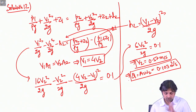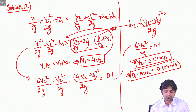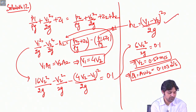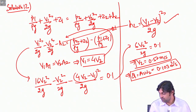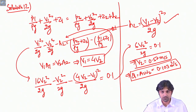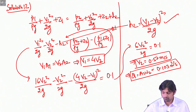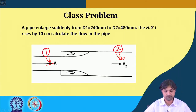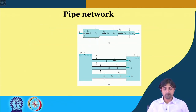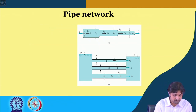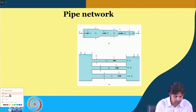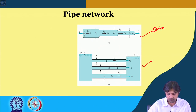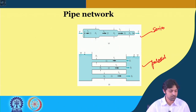This is a simple application of Bernoulli's equation, the equation of continuity, and the minor loss formula for sudden expansion: HL = (V1 − V2)²/2g, as covered in the topic on minor losses in pipes. We now proceed to the topic of pipe networks, where pipes can be connected in series, parallel, or a combination of both.